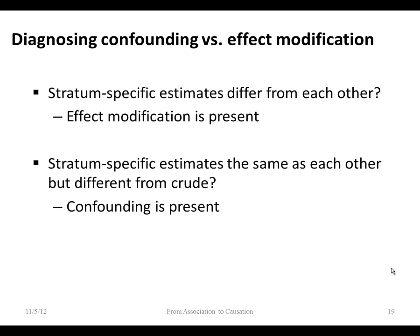How do you know from stratification whether you've got a confounder or an effect modifier? For confounding — the IUD/salpingitis example — the stratum-specific estimates were the same as each other but both different from the crude un-stratified measure, suggesting confounding. We also saw different rates of IUD use across strata by number of sexual partners. For effect modification, you look for stratum-specific estimates that differ from each other — as we saw with carotene consumption and smoking. If that's the case, you've found an effect modifier.